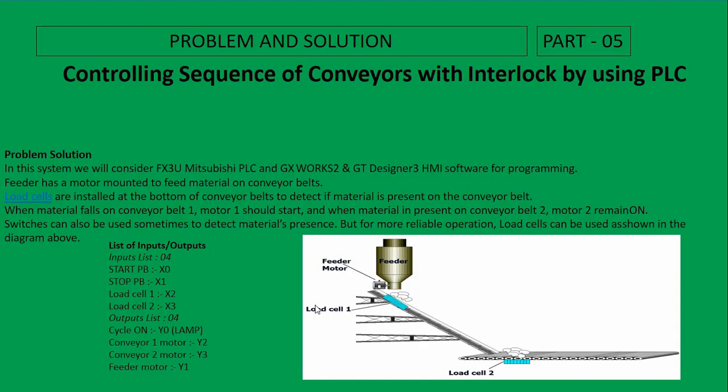In this program we need four inputs: start button at address X0, stop button X1, load cell 1 at X2, and load cell 2 at X3. We need four outputs: cycle lamp Y0 (LAM1), feeder motor Y1, conveyor motor 1 at Y2, and conveyor motor 2 at Y3.